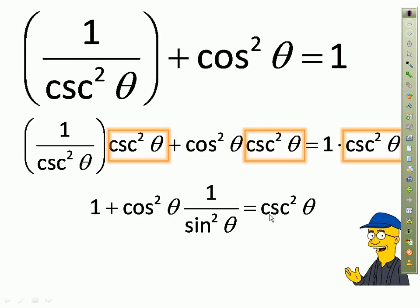On the other side we have cosecant squared theta. This is our second Pythagorean identity: one plus cotangent squared theta equals cosecant squared theta.